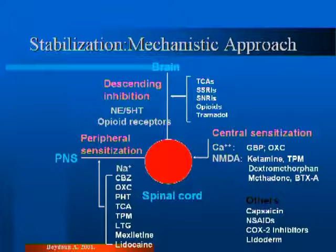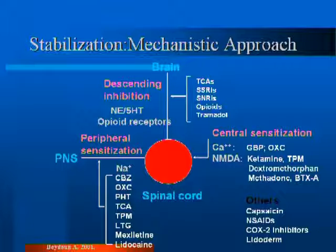In peripheral sensitization, you usually use drugs that affect sodium channel conductance. The classic ones are phenytoin, Dilantin, oxcarbazepine, Tegretol, and tricyclic antidepressants. The ones that affect central sensitization are gabapentin, pregabalin, oxcarbazepine, and also NMDA antagonists. These drugs will mainly affect calcium conductance, while other drugs will affect N-methyl-D-aspartate receptors.